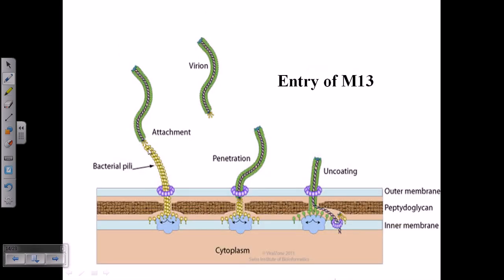After this interaction, using the gp3 protein, the phage brings itself very close to the host cell. After a certain time it rotates itself and injects its components inside the host cell. They do not need to penetrate any cell wall or cell membrane because they take entry using the pore from where the F-pili is forming. There is a natural pore inside the bacterial cell membrane and the phage uses this pore to enter inside the host cell.